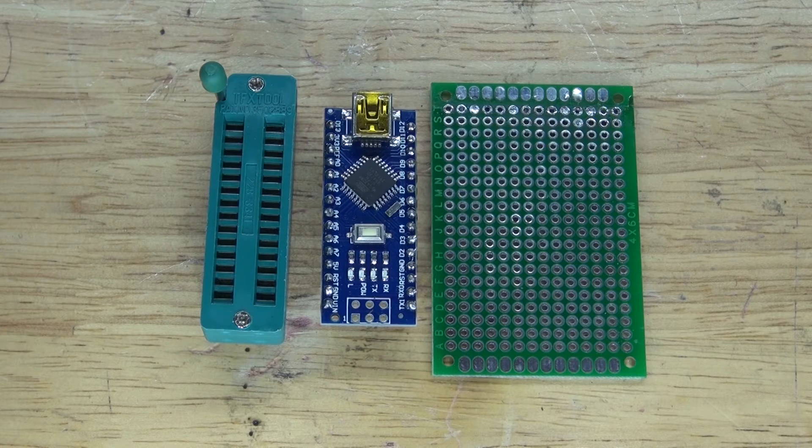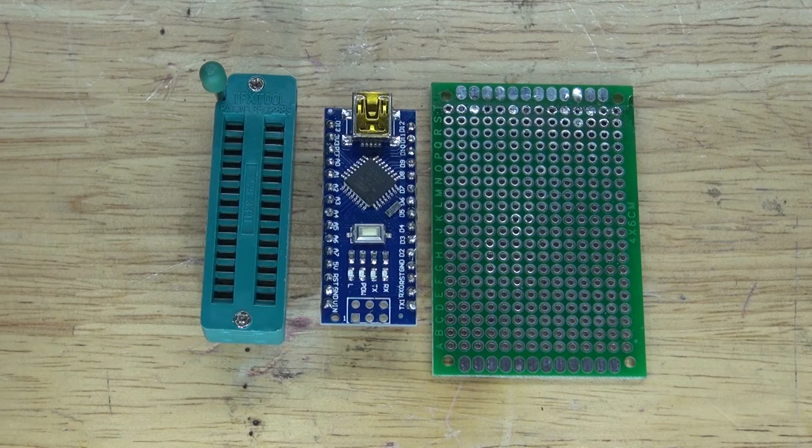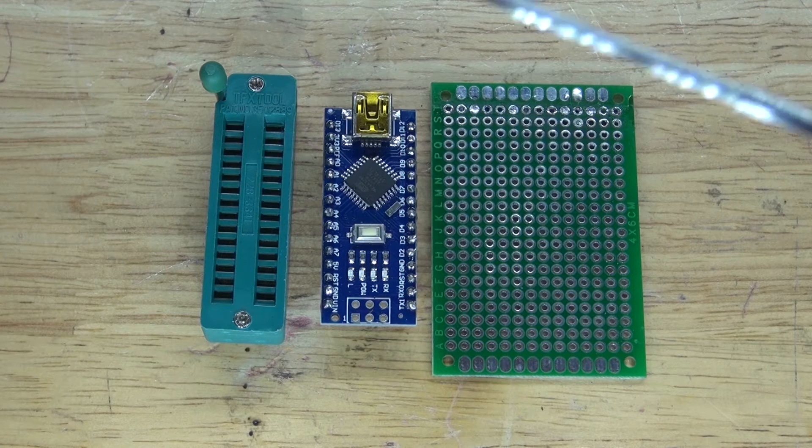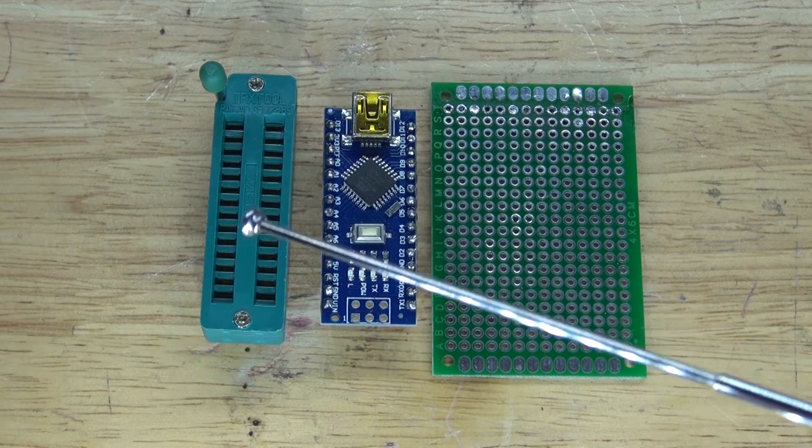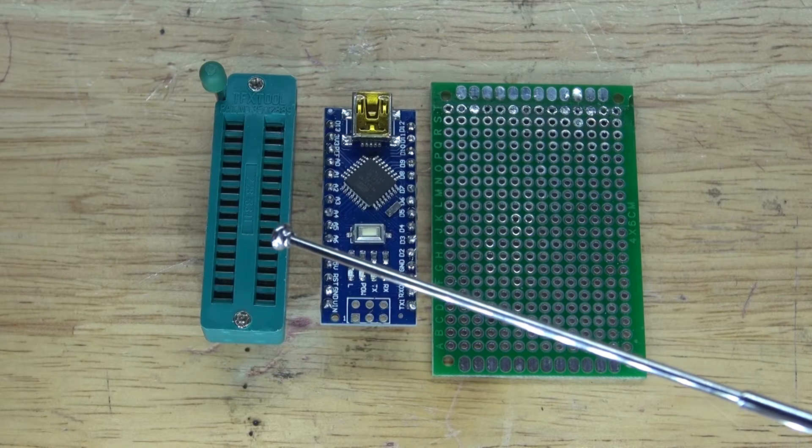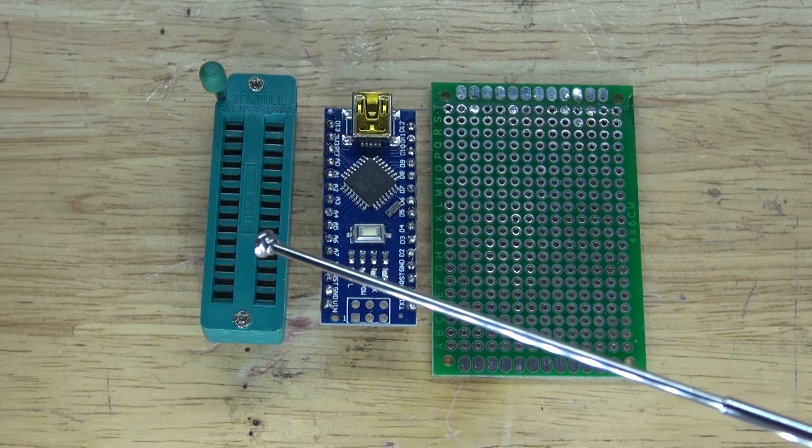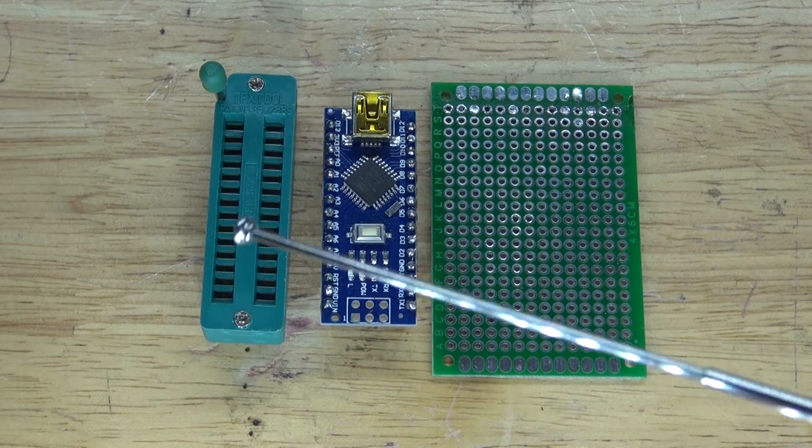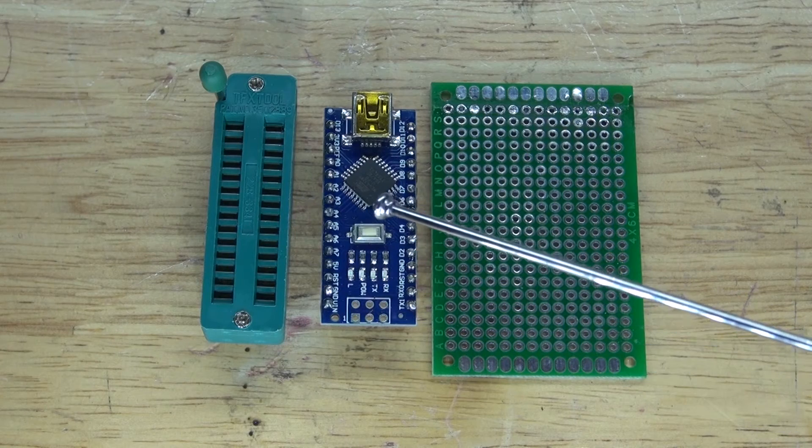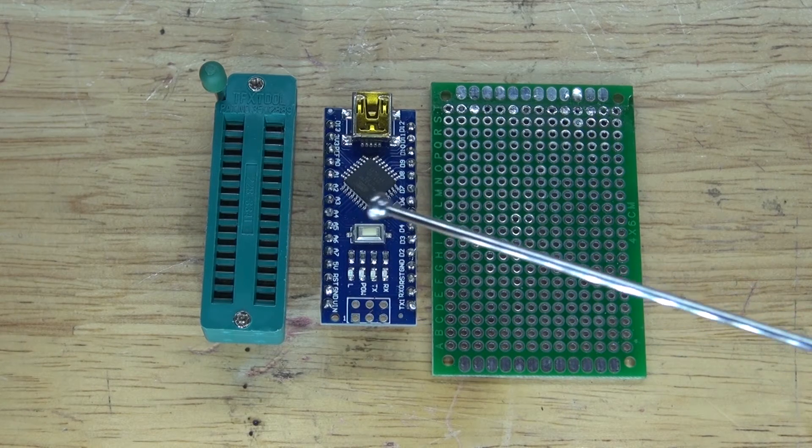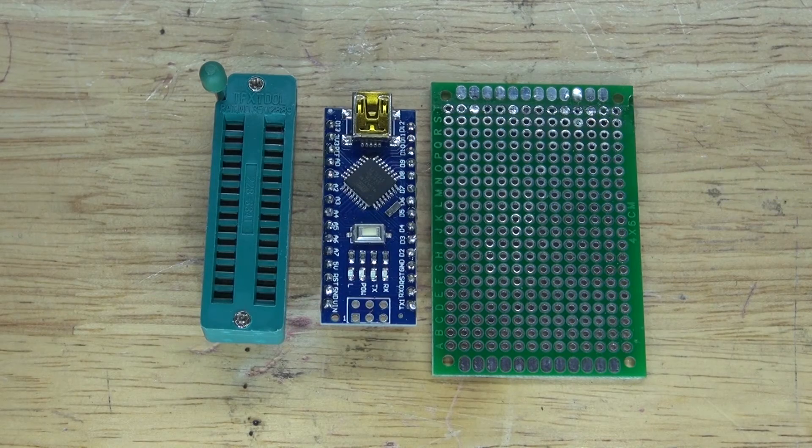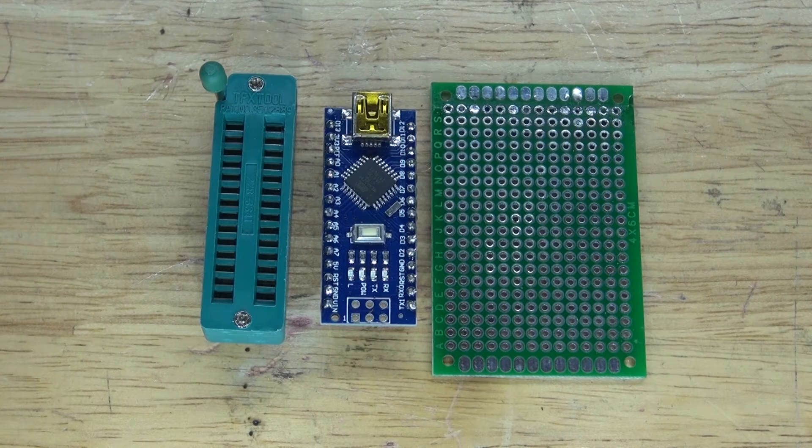These are the items that you're going to need to make this project. The items you're going to need are a universal ZIF IC socket holder, and this is a 28 pin version. You're also going to need an Arduino Nano, a perf board, and of course, you're going to need some wires.